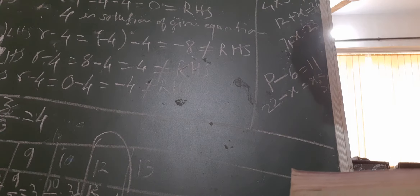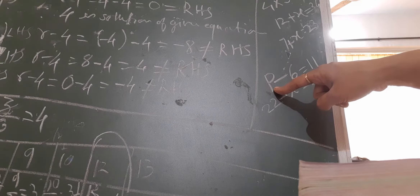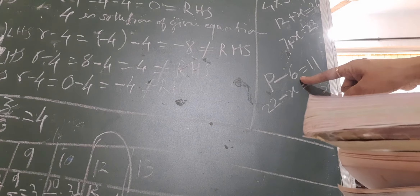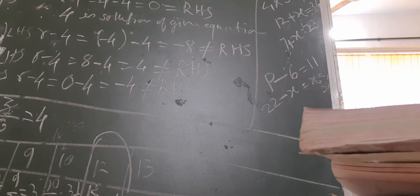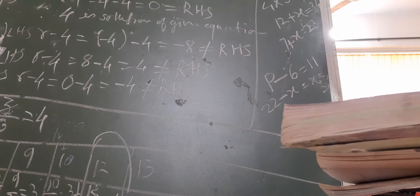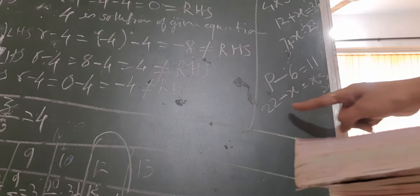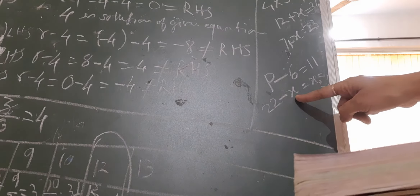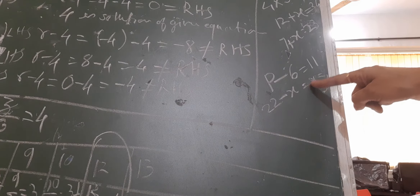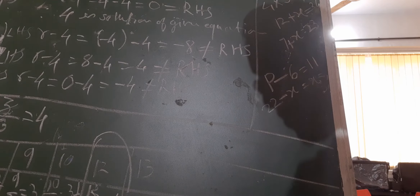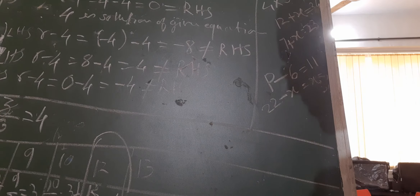Third riddle: 'I am a special number, take away from me a 6, a whole cricket team you will still be able to fix.' Let the special number be P; subtracting 6 gives a cricket team of 11, so the equation is P − 6 = 11. Fourth riddle: 'You will get back me if you subtract me from 22.' So the equation is 22 − x = x. You have to find the value of x. These riddles are just for fun — you can do it!